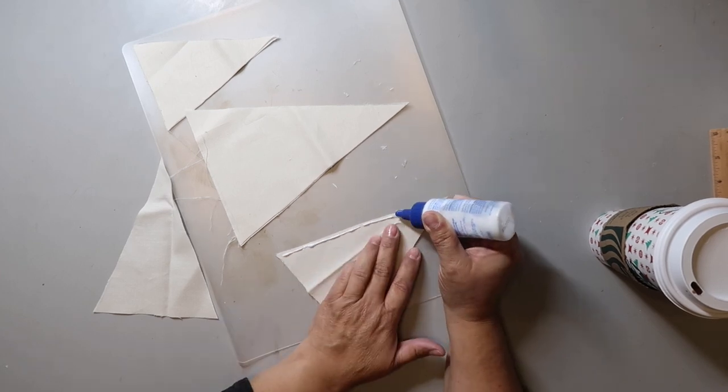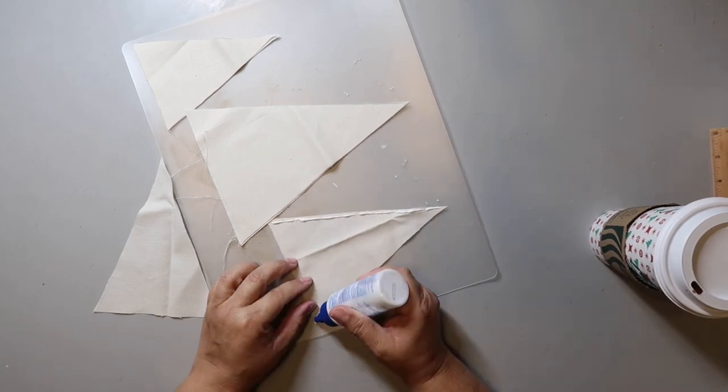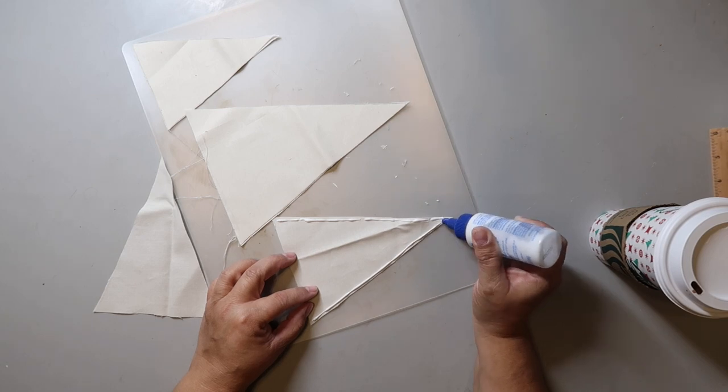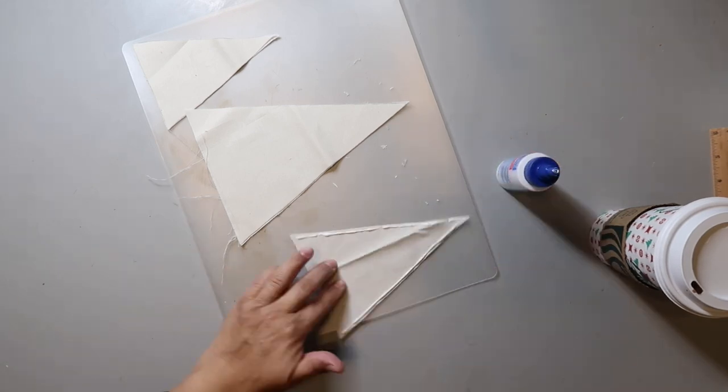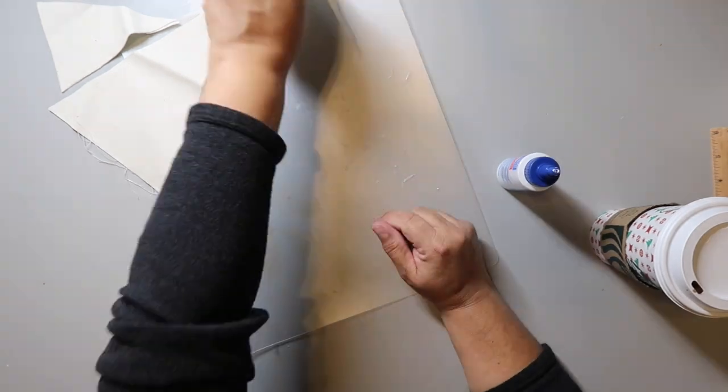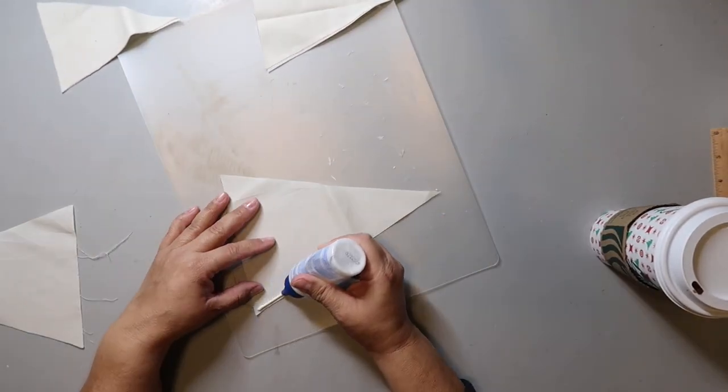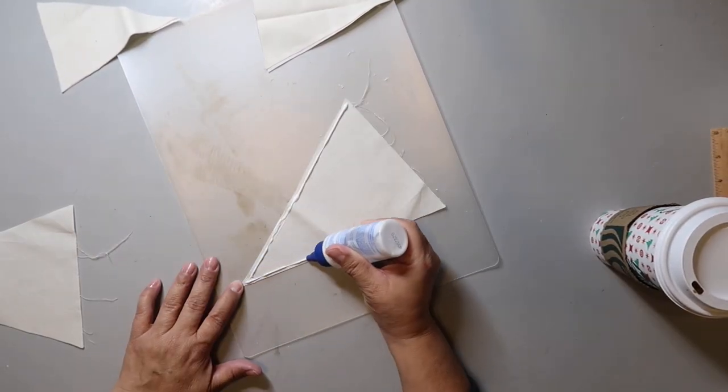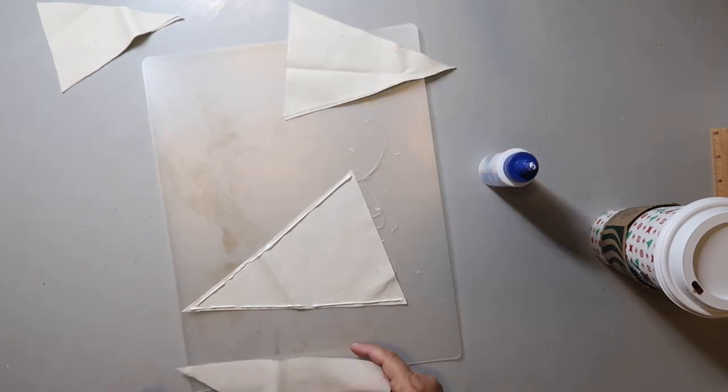I'm using that magical liquid stitch that you can get at Hobby Lobby, and of course you can get it at other craft stores too, or Amazon. I'm putting a thin bead of glue, well, at least I'm trying to make this a thin bead of glue on the long sides of the triangle fabric, and then placing them together. I do this for all three triangles.